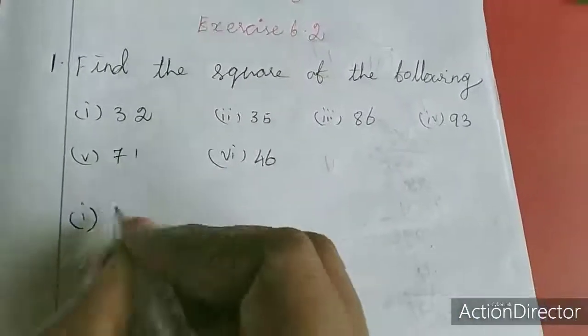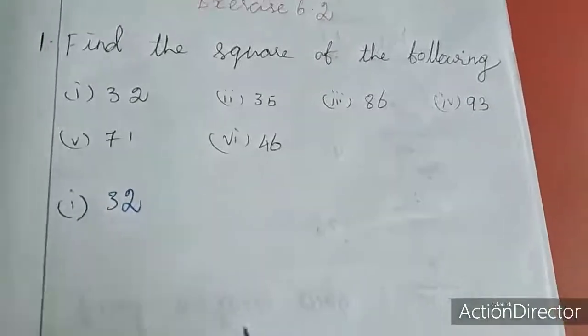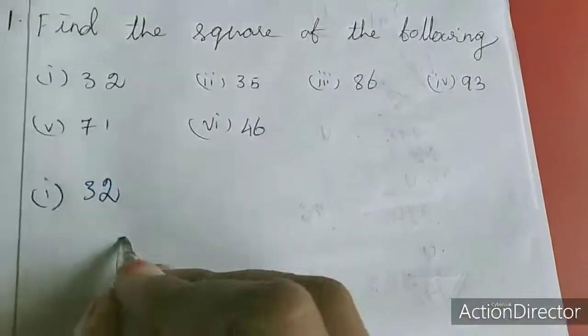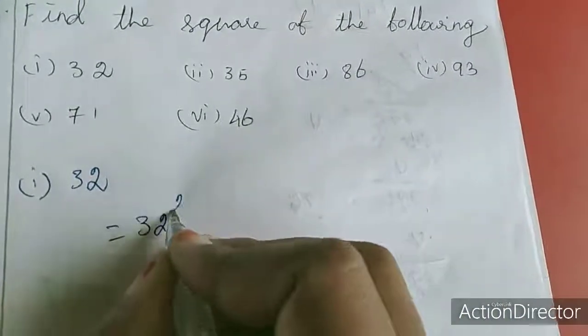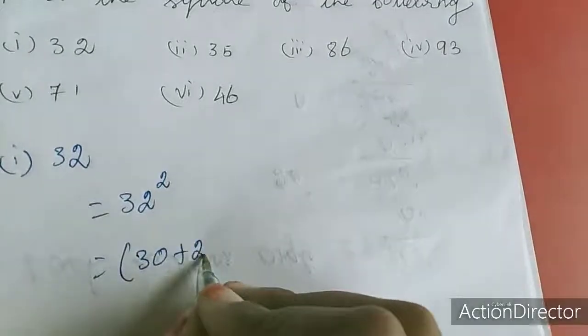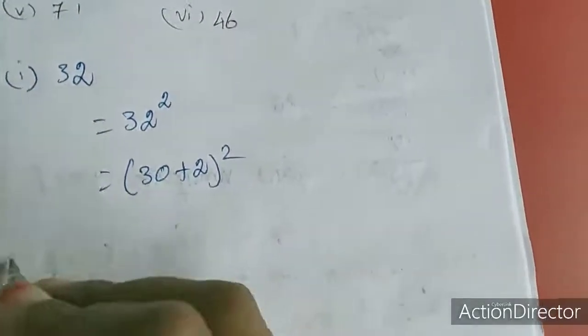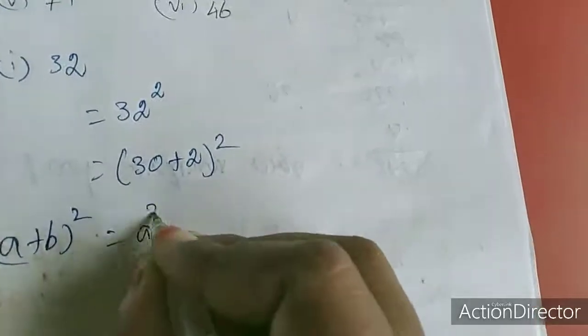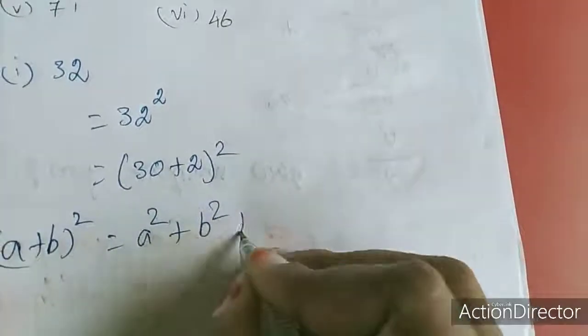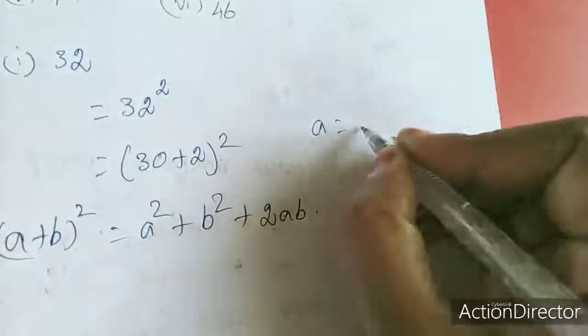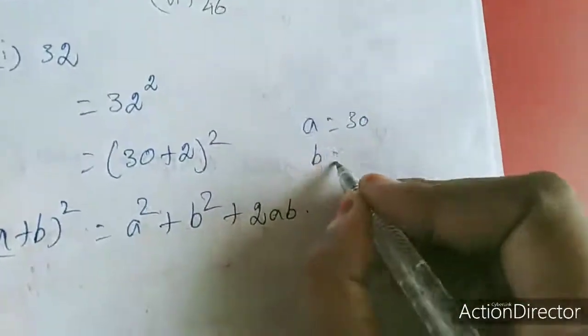First sum is 32. We can square directly, but I am going to use one more method. Square they are asking, so we will write 32 square. So I am writing 30 plus 2 the whole square. We know a plus b the whole square equal to a square plus b square plus 2ab. Here a equal to 30, for b we have 2.